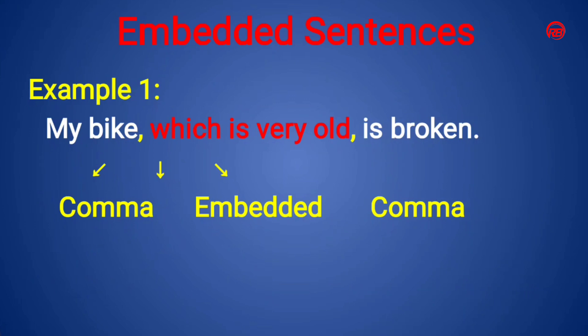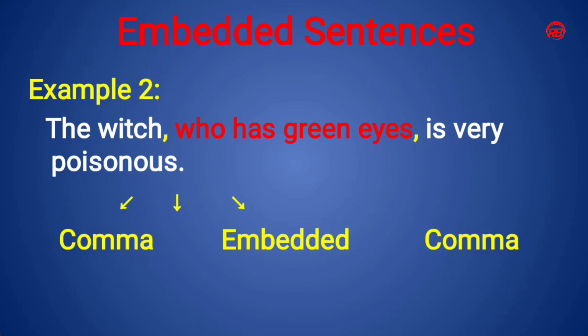Here is an example: 'My bike, which is very old, is broken.' The middle part — 'which is very old' — is the embedded sentence. If we remove the embedded clause from the sentence, the meaning does not collapse: 'My bike is broken' still gives a complete meaning. The embedded clause gives additional information about the subject and appears between two commas.